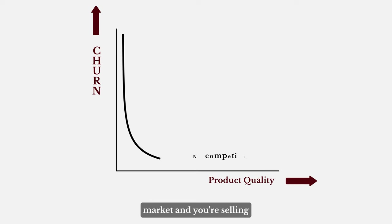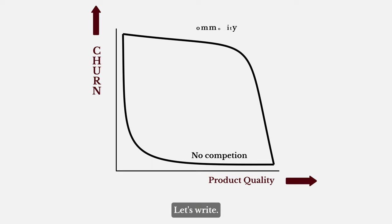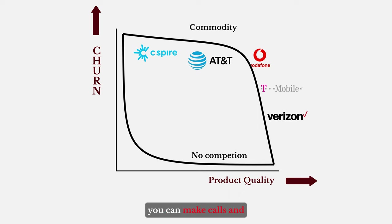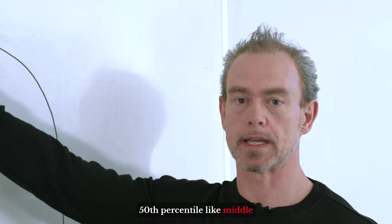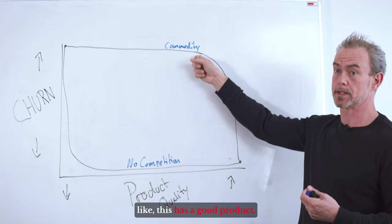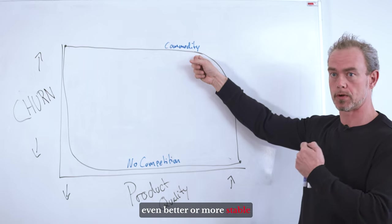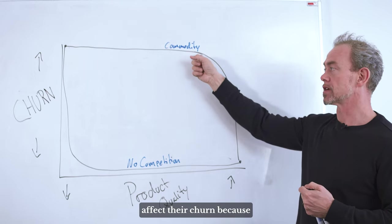What then happens if you have a lot of competition? If you're in a commoditized market and you're selling something that the customer can go out and get anywhere else? Well, the opposite happens. Now the customer travels along this line. Let's write commodity here. So this would be something like your average phone company, like Verizon, Vodafone and so forth. You can make calls and go online with their data services and send text messages on every one of them. So improving their product from 50th percentile, middle of the market, to 75th percentile, like this has a good product, isn't materially going to affect their churn because they have so much competition.